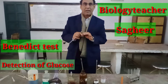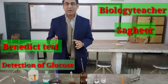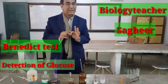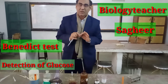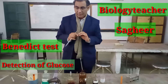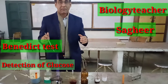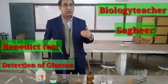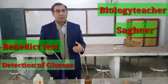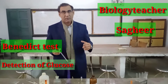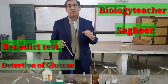The specific tests for glucose are the coarse test, failing test, and bandit test. Today I would like to show you how the bandit test is carried out for detection of glucose in a certain solution.